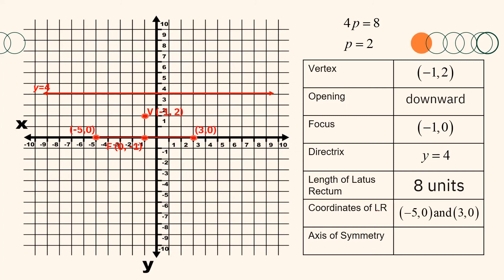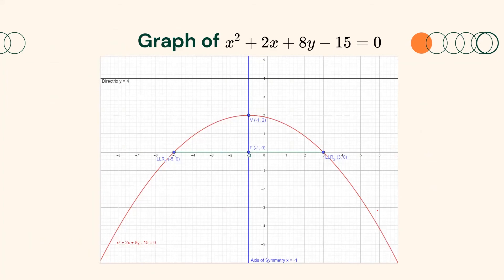Now we can draw our parabola. The line that divides the parabola into two equal parts is the line x equals negative 1. This is the illustration of the parabola with equation x squared plus 2x plus 8y minus 15 equals 0.